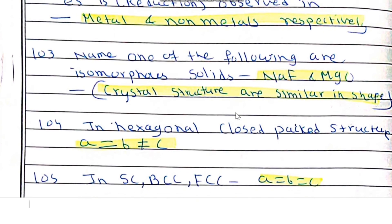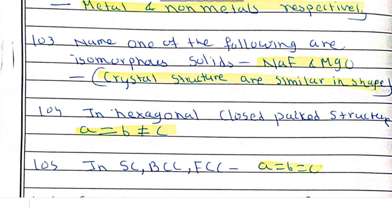NaF and MgO are isomorphous solids, meaning their crystal structures are similar in shape.